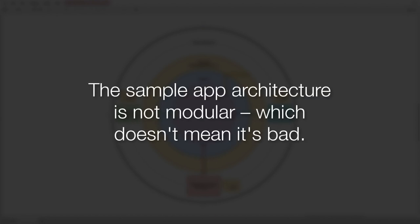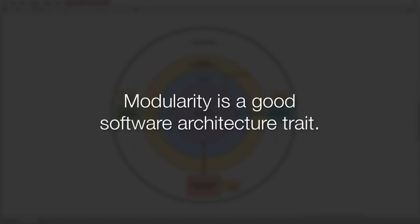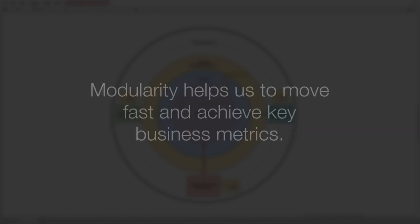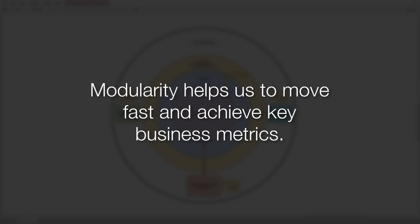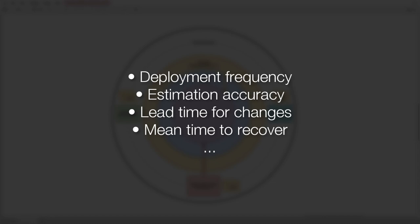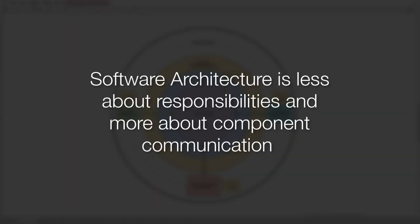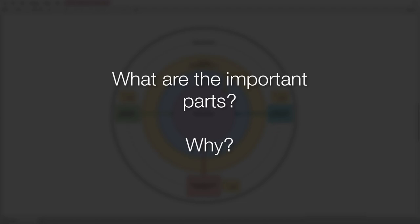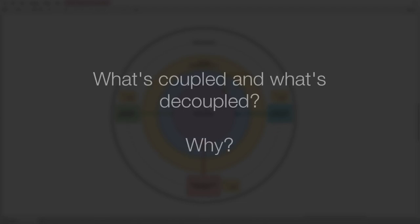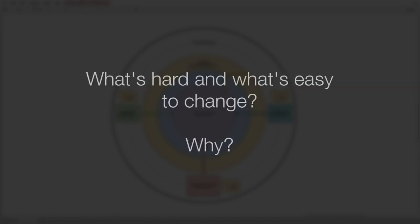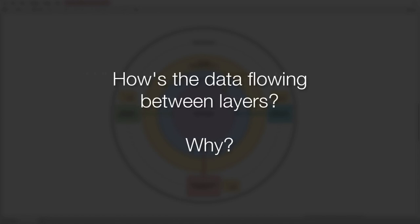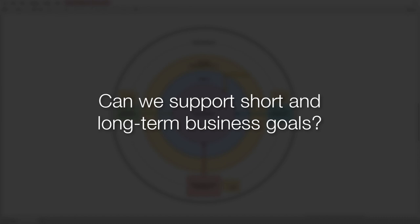If we want to create a somewhat testable monolith, it might work well. However, we might quickly find out that the lack of modularity prevents us from scaling the team, moving fast, and prevents us from achieving key business metrics — for example, deployment frequency, estimation accuracy, lead time for changes, mean time to recover, and so on. As explained in the previous video, we believe that software architecture is less about your types, classes, and even responsibilities, and more about how the components communicate with each other, how they depend on each other, and what is the shared understanding of senior developers regarding what are the important parts — what is coupled, what is decoupled, what is hard to change, what is easy to change, and why. How is the data flowing between layers and why — is the data going in one direction, two directions, multiple directions — and can we support the business's short and long-term goals.